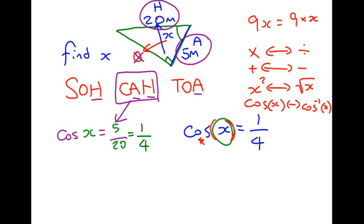So to get rid of this cos X, we need to do cos to minus 1 of both sides of the equation to get left of X. And in your calculator, you can type cos to minus 1 of a quarter, and you get the answer of 75.5 to 3 significant figures.